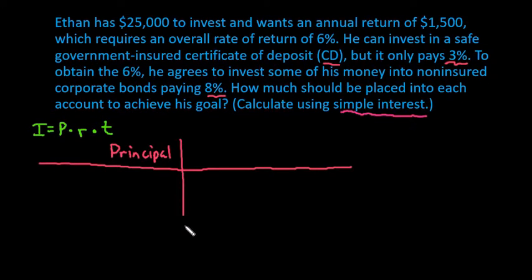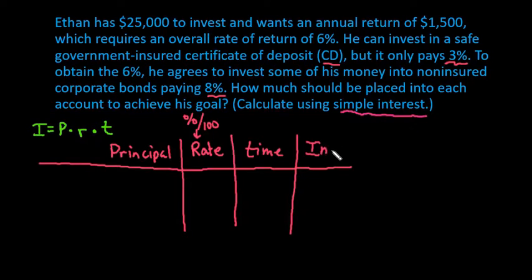Then we want to look at our rate as a decimal, so always put this in as a decimal and not as a percent. So remember, the rate is percent divided by 100. You take whatever the percent is and divide it by 100 to get your rate. And your time, remember, this has to be in years.